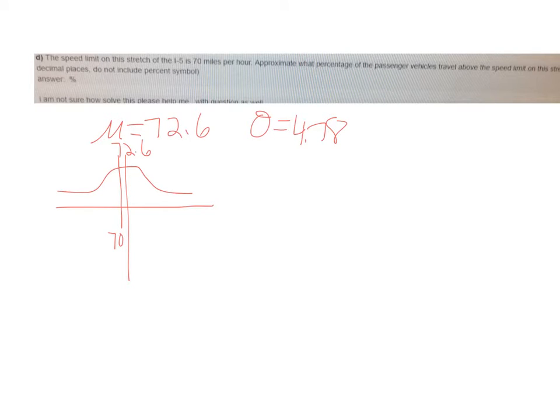And so what you're going to do is work this out as a Z score. You're going to get a negative Z value. And that's going to give you the percentage of the population that's traveling less than 70. But that's not what you want. What you want is the population that are traveling greater than 70 miles per hour.